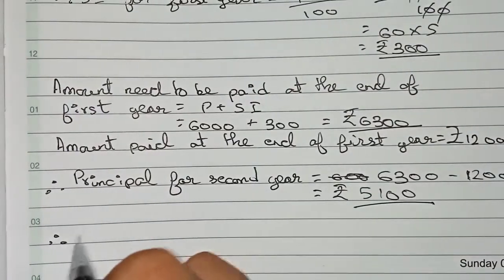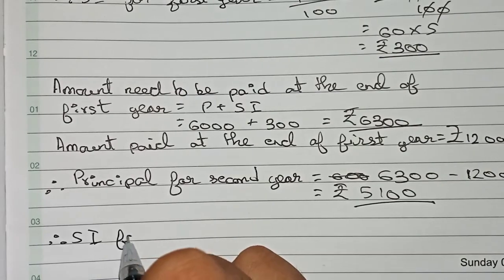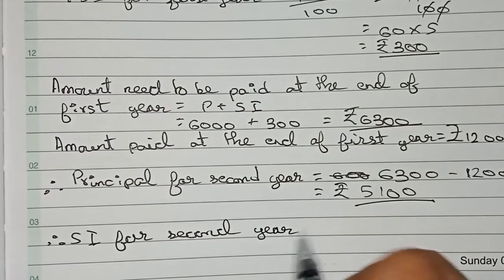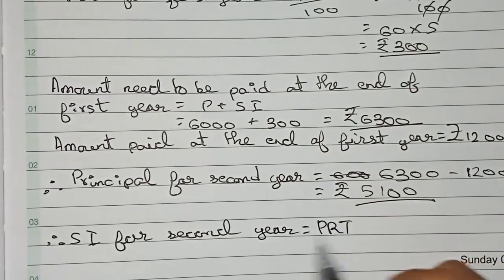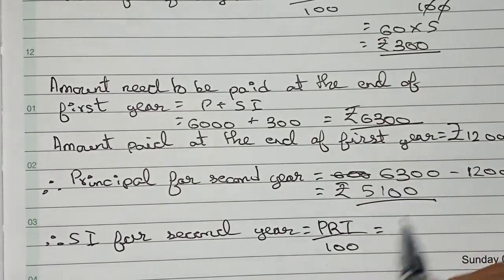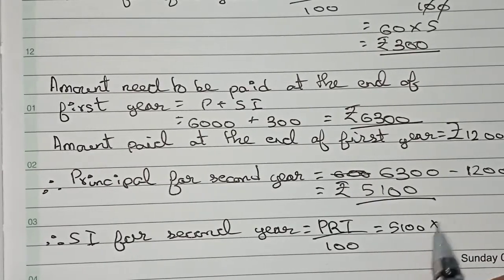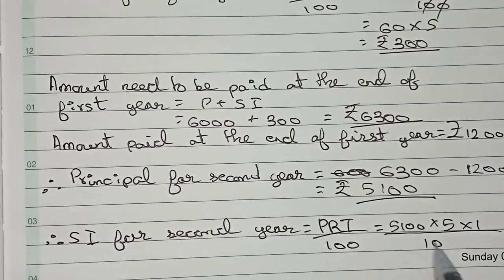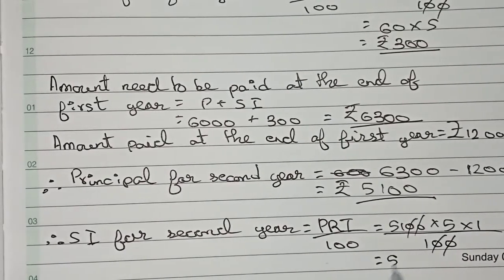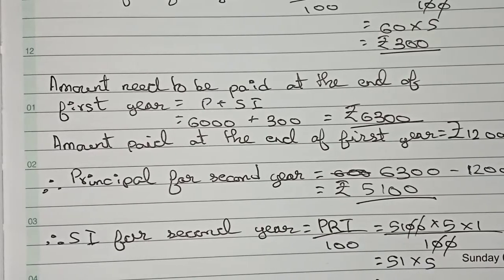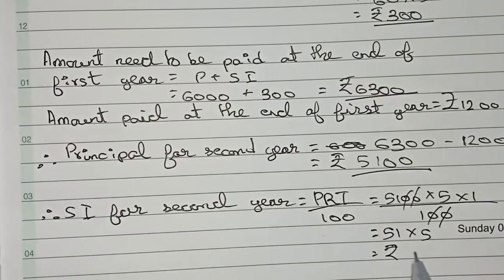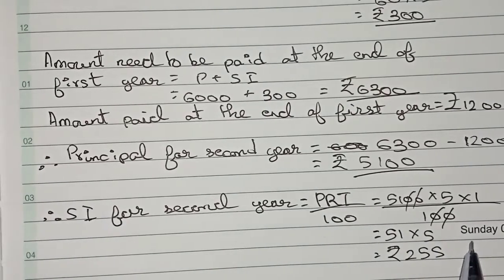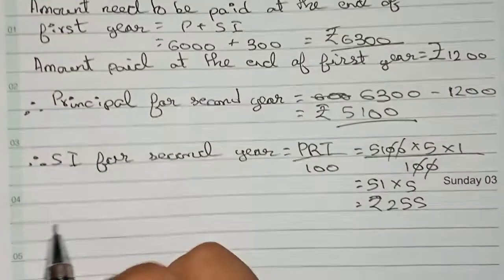Now we calculate SI for the second year using the same formula: P × R × T / 100. The principal is 5100, rate is 5%, and time is 1 year. So: 5100 × 5 × 1 / 100. Cancelling the zeros, we get 51 × 5, which equals rupees 255. This is the SI for the second year.